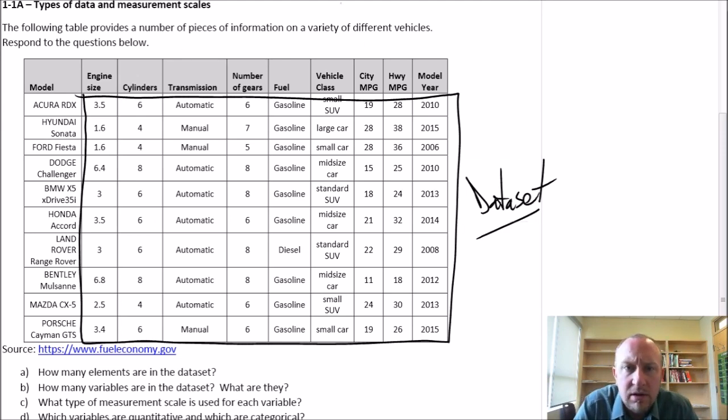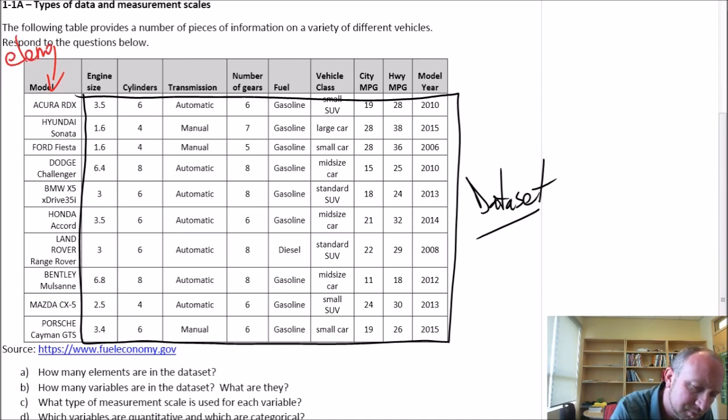Now the data set is composed of information drawn from various elements. An element is that one particular object or entity that we are looking at that we are extracting information from. In this data set the elements are described in this first column. Our elements are these different cars, different vehicles that we're looking at.